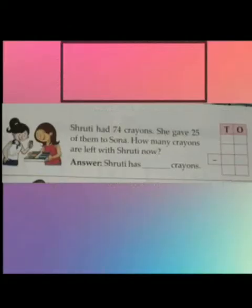Read the next question. Shruti had 74 crayons. She gave 25 of them to Sona. How many crayons are left with Shruti now? In this word problem, the word gave indicates subtraction.